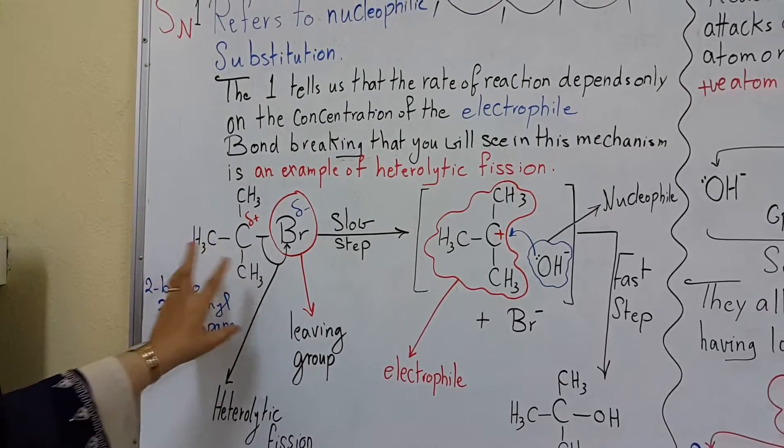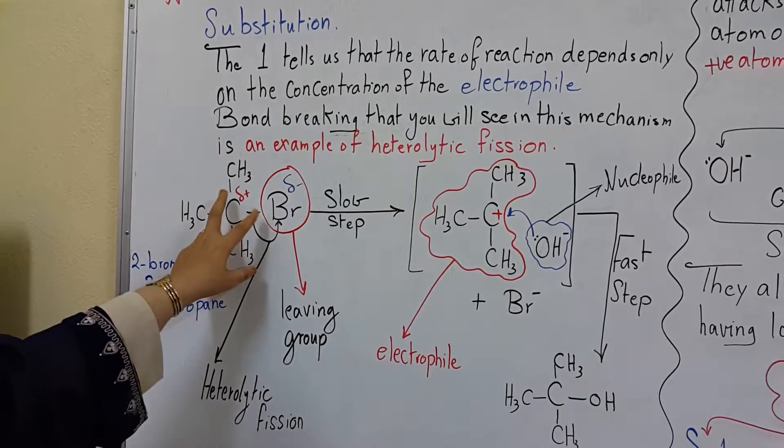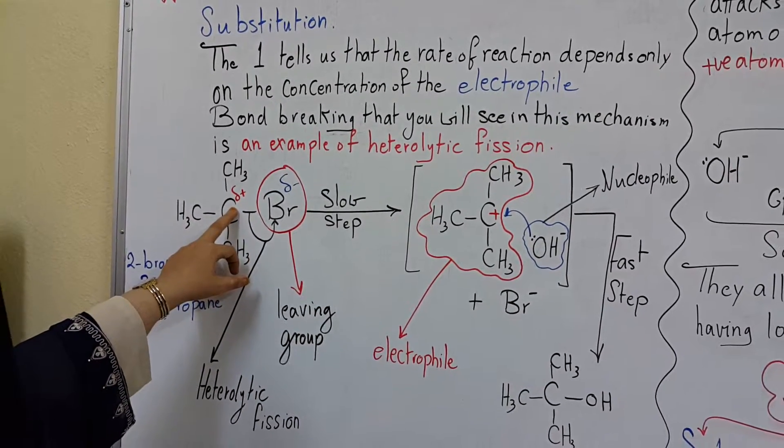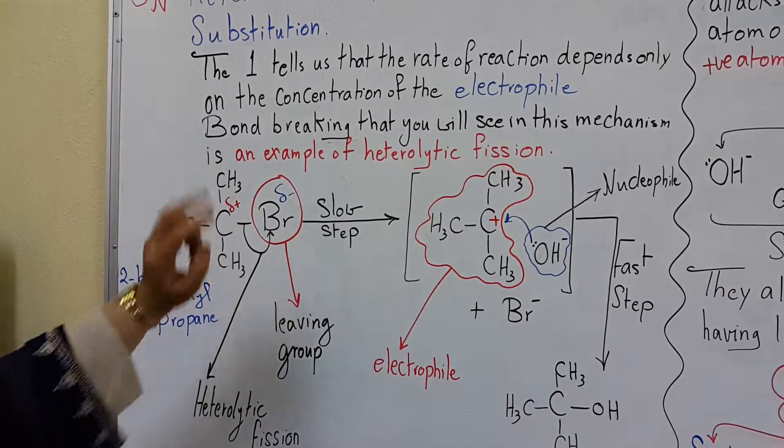This tertiary haloalkane is named 2-bromo-2-methylpropane. It has a partial positive charge on the central carbon and a partial negative charge on the bromine atom.